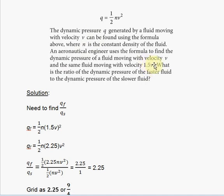We need to find the ratio of the dynamic pressure using this formula. It asks us to find the ratio of the faster to the slower. When it says faster to slower, that means the fraction, because the ratio is a fraction. Faster to slower means the faster will be in the numerator of the fraction and the slower dynamic pressure will be in the denominator.